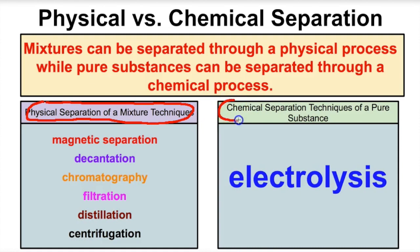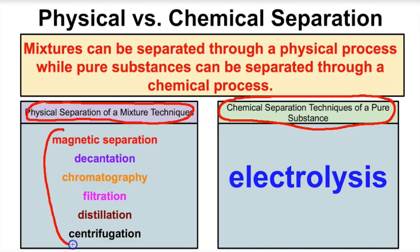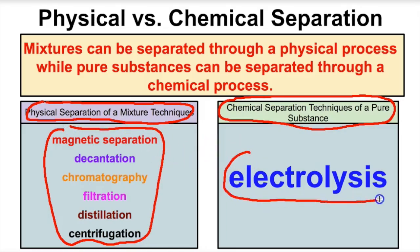And we said for pure substances like a compound, like water, a chemical process is going to have to take place to separate the hydrogens from the oxygen in a water molecule, which is a pure substance. So mixtures can be separated through a physical process, while pure substances can be separated through a chemical process. Today we're going to talk about six different ways that we can separate a mixture, and then we're going to talk about electrolysis.